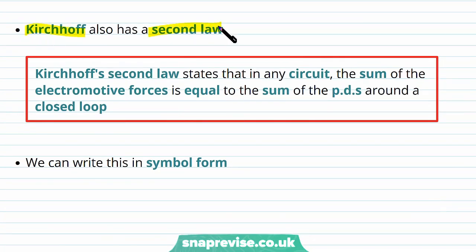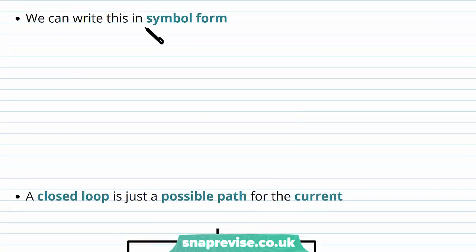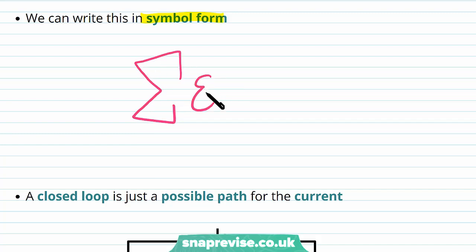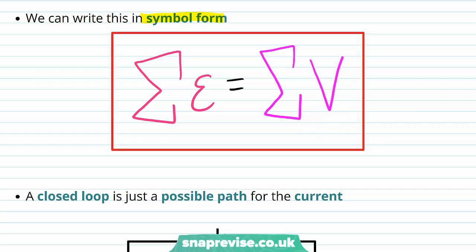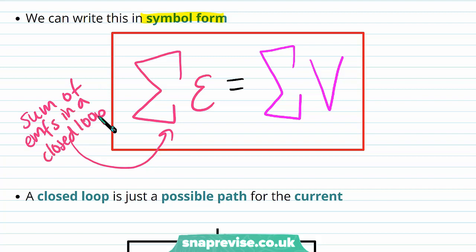Kirchhoff also has a second law. Kirchhoff's second law states that in any circuit the sum of the electromotive forces is equal to the sum of the potential differences around a closed loop. We can write this in symbol form: the sum of the EMFs (symbol epsilon) is equal to the sum of the potential differences (symbol V).